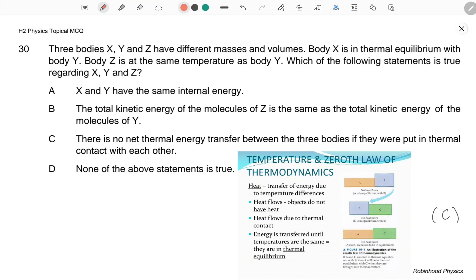X, Y and Z have different masses and volumes. X is in thermal equilibrium with Y. This means that X and Y are at the same temperature. Z is also at the same temperature as Y.